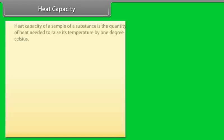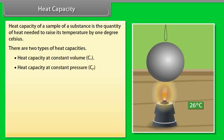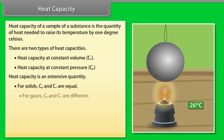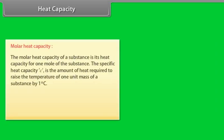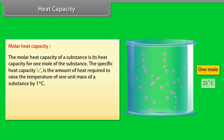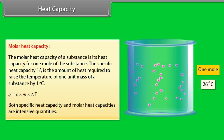Heat capacity of a sample of a substance is the quantity of heat needed to raise its temperature by 1 degree Celsius. There are two types: heat capacity at constant volume and at constant pressure. For solids, Cp and Cv are equal; for gases, Cp and Cv are different. Heat capacity is directly proportional to the amount of substance: Q equals Cv times delta T, where delta T equals Tf minus Ti. The molar heat capacity is the heat required to raise the temperature of 1 unit mass of a substance by 1 degree Celsius: Q equals C times M times delta T. Both specific heat capacity and molar heat capacity are intensive quantities.